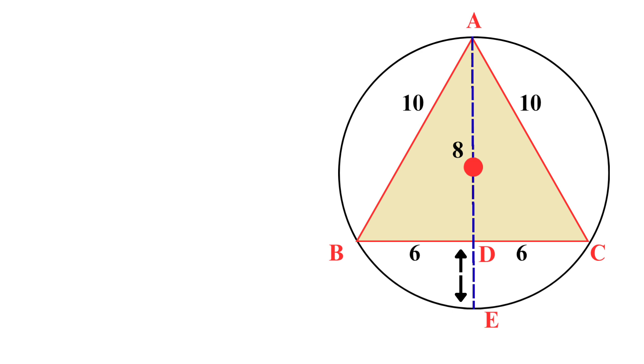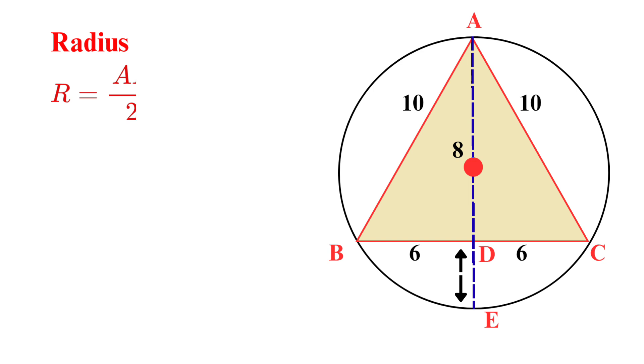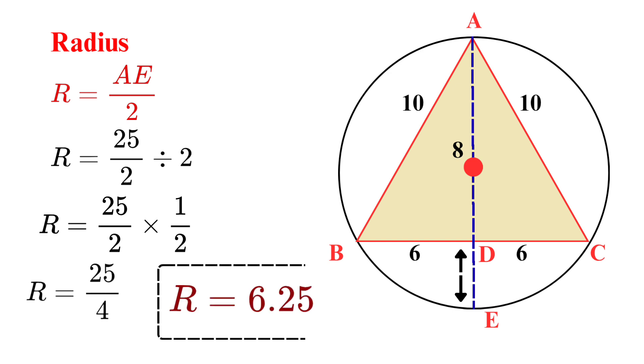Now, observe that AE is a diameter of the circle. Therefore, to find the radius, we first calculate the diameter and then divide it by 2. AE equal AD plus DE. This becomes AE equal 8 plus 36 over 8. By simplification, it equal 25 divided by 2. Now we are going to find the radius. Radius denoted by R equal AE over 2. This becomes 25 over 2 divide by 2. R equal 25 over 4, which is equal to 6.25.